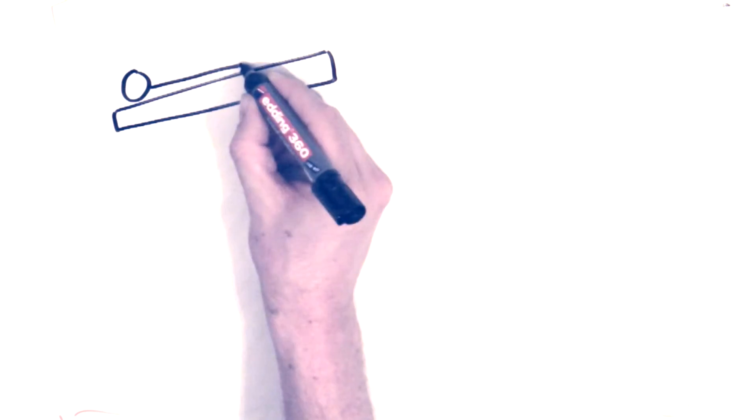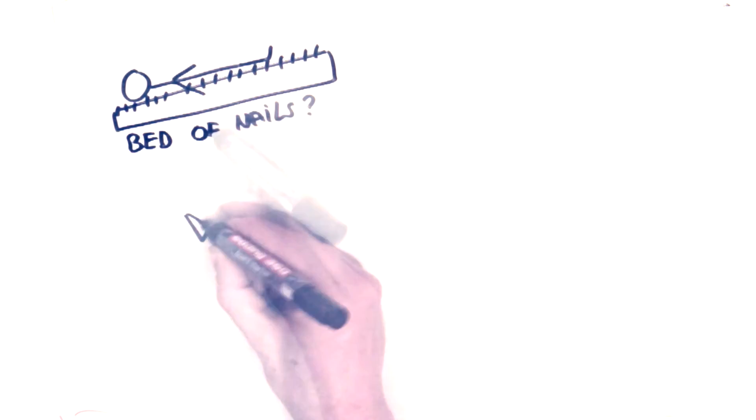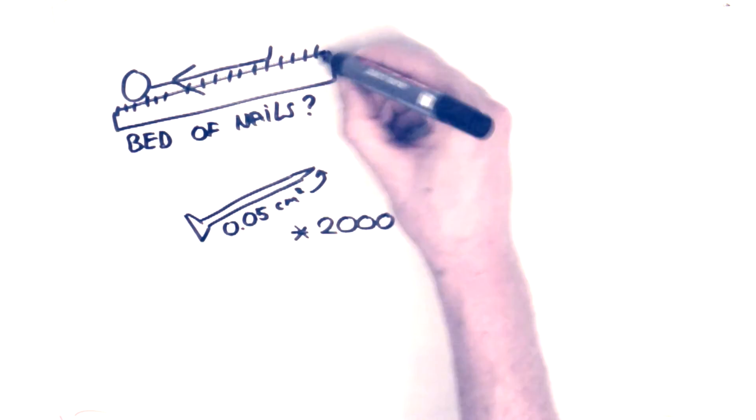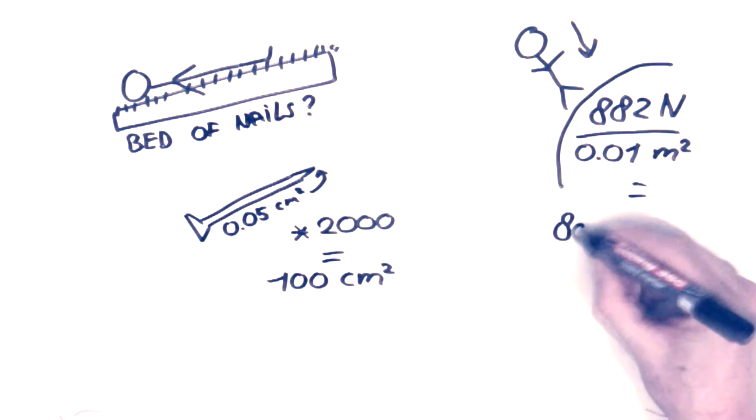So how does a bed of nails work, and why doesn't it hurt when you lay down on it? It turns out the area of a nail is pretty small, it's just 0.05 centimeter squared. But let's say we have 2000 nails, that makes the area 100 square centimeters. If I lay down very carefully, we end up with 88,000 pascal, just 0.08 megapascal. And doesn't hurt.